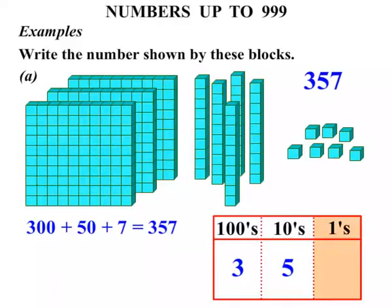And finally the ones or units. Sometimes known as units. We had 7 of them. So we can see 3, 5 and 7 makes the number 357. Terrific.